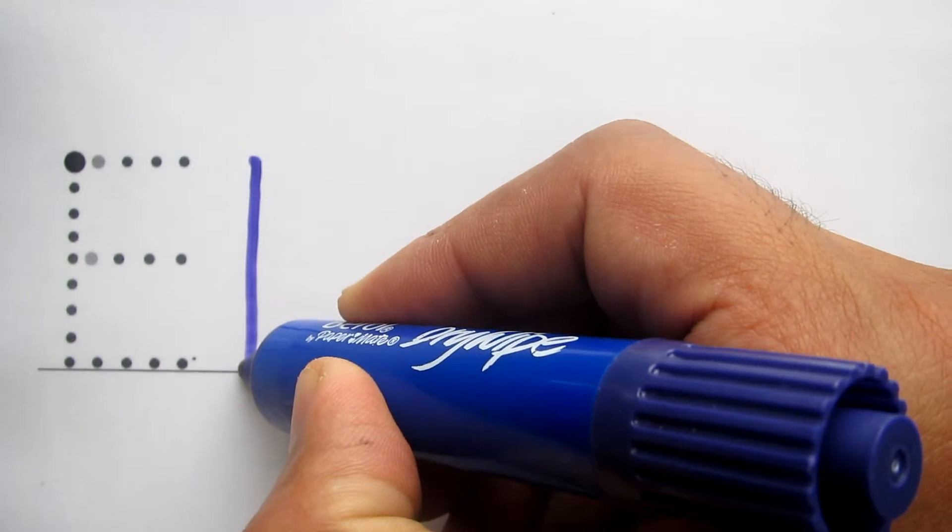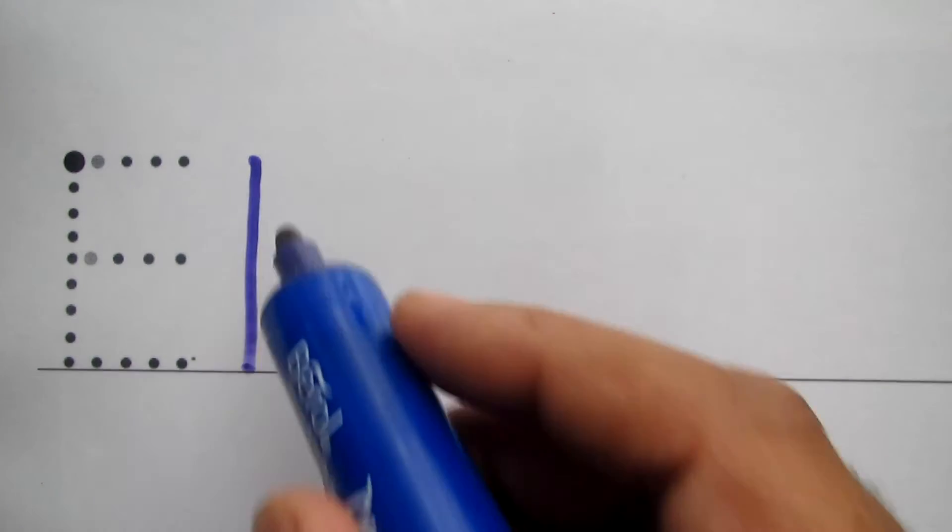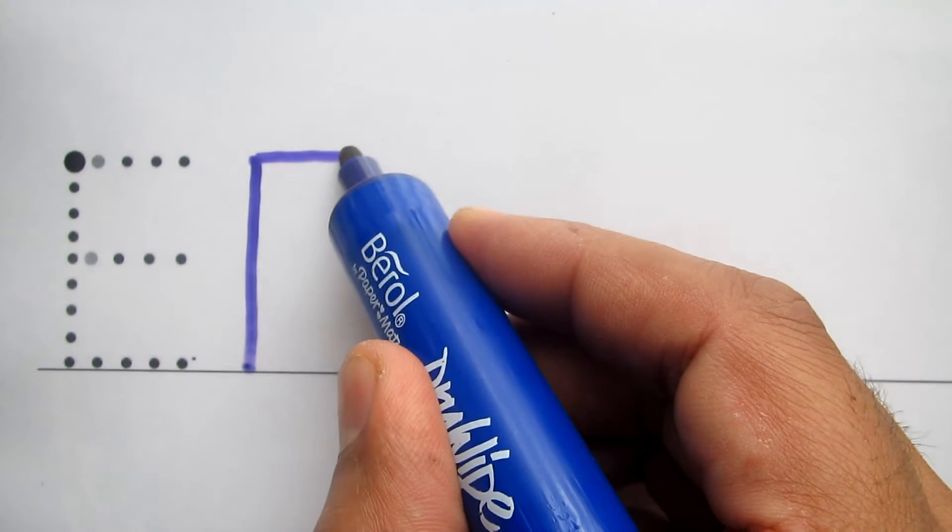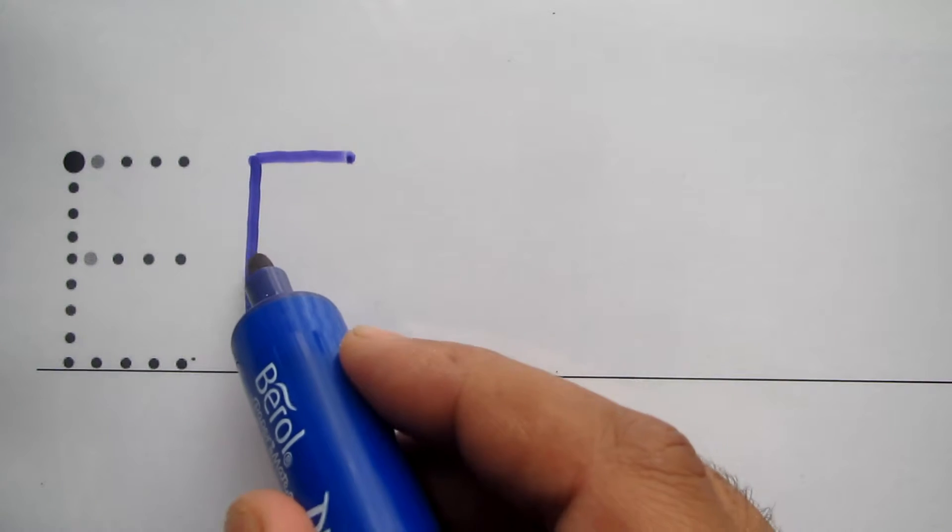A straight line to the bottom, stop there, go back to the top, draw a line across, go to the middle, draw a line across, go to the bottom, draw a line across, the capital E.